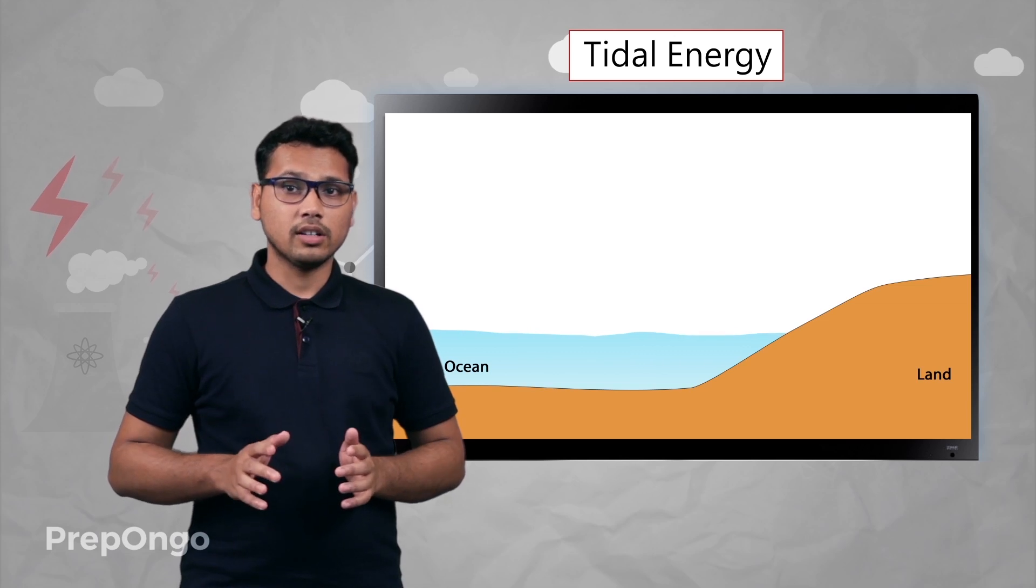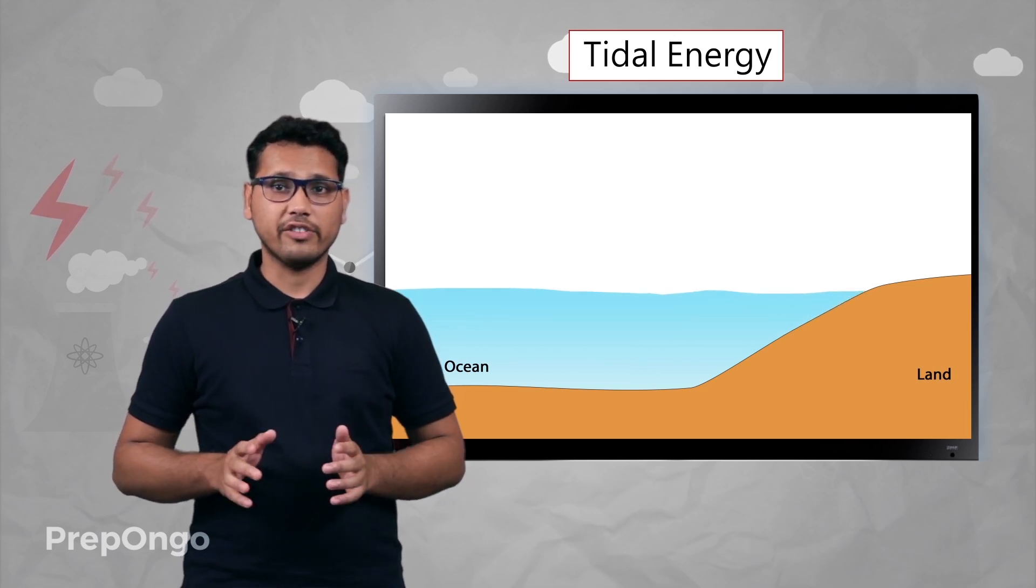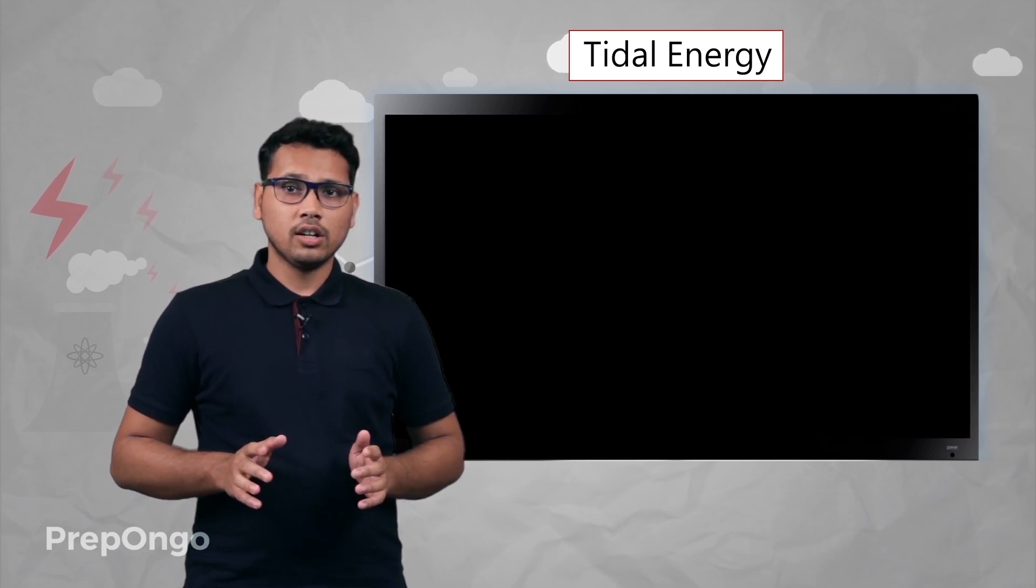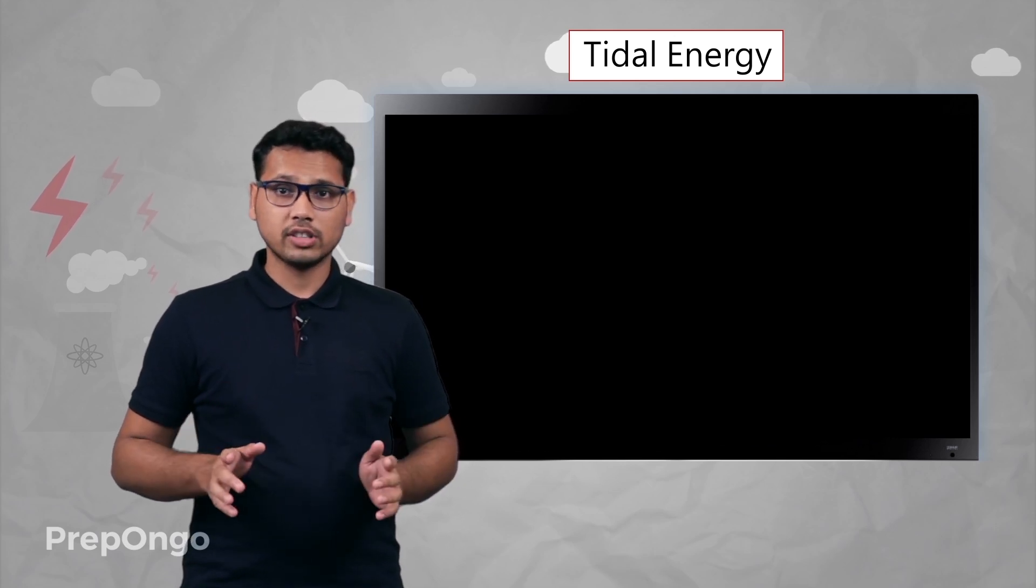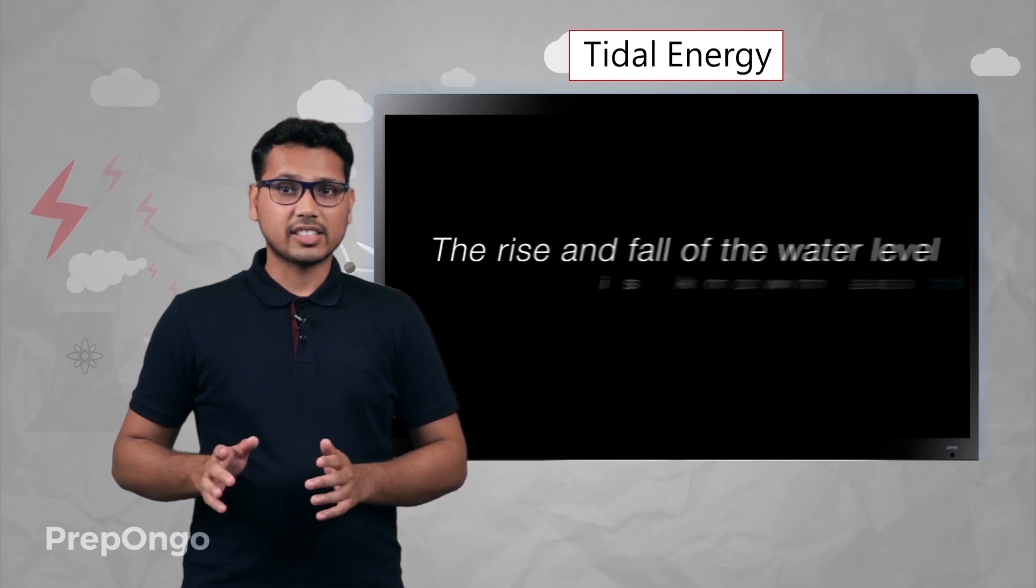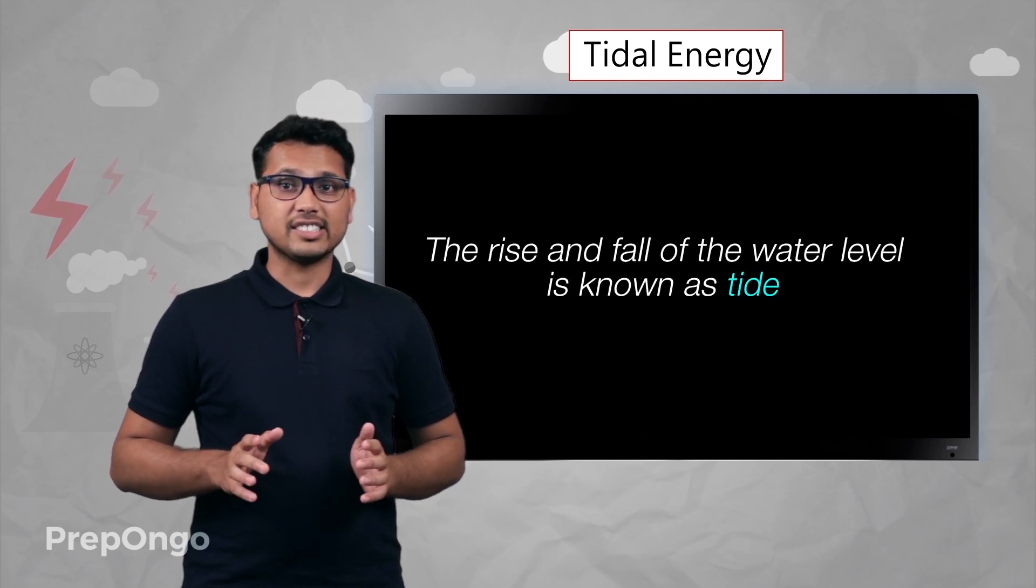Then after some time, again the ocean water level rises. So this is a very common phenomenon that happens on the shores, and this rise and fall of the water is known as tides.